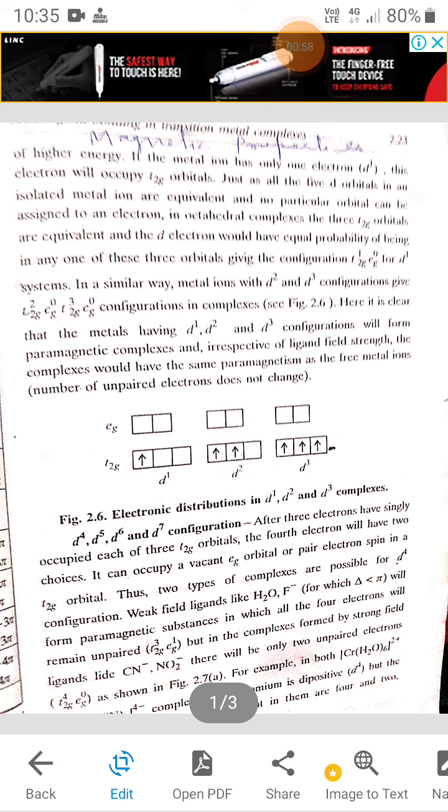the D orbital is occupied by T2G and EG electrons. The electron of T2G orbital jumps into the EG orbital and while jumping or while shifting,